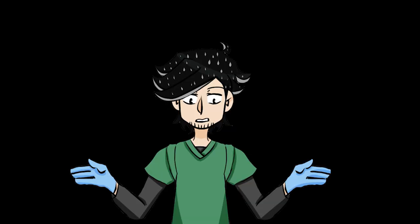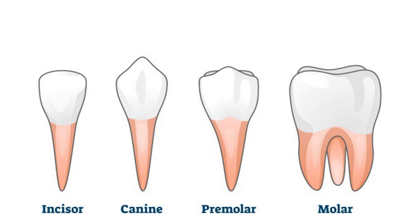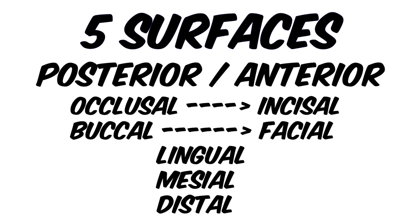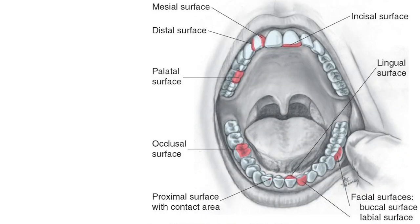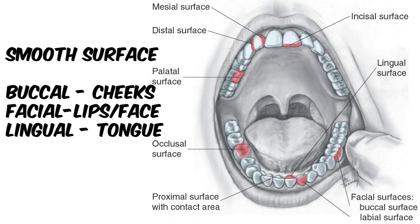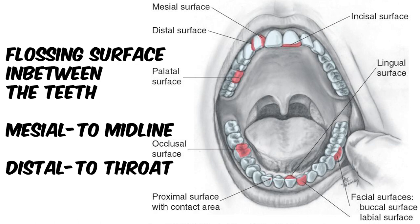Now we're going to talk about our surfaces of the tooth. While teeth may have different names and functions like we mentioned before, what is consistent about every tooth is the amount of surfaces on the tooth that we have. There are five surfaces per tooth. The names overall are the same, but with a few changes depending on where the tooth is located in the front or in the back. These surfaces are the occlusal or the incisal edge, then there's the smooth surfaces - our buccal/facial surfaces and our linguals - and then there's the in-betweeners, the mesial and the distal.